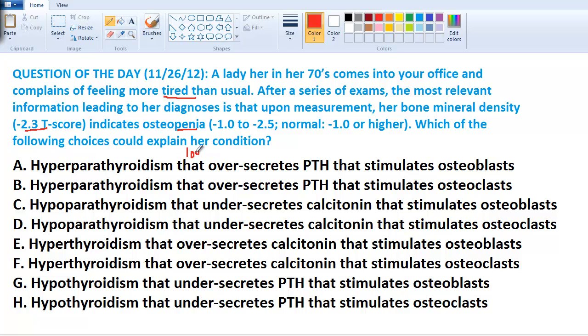That has to do with a low level of bone density because the normal is negative 0.1 or higher and she's much lower than that. So basically we're saying here weak bones.